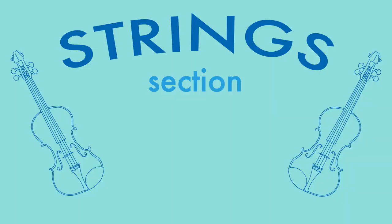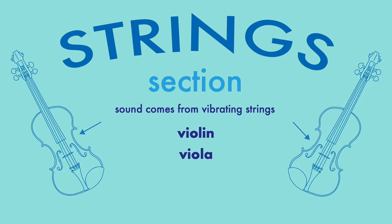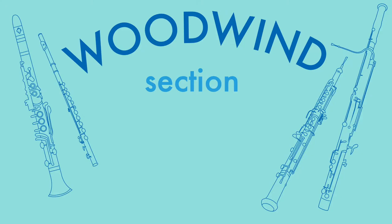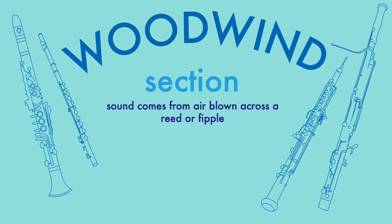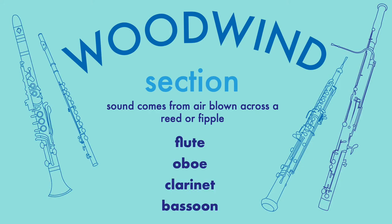The string section is made up of instruments that make their sound from vibrating strings, and these include instruments like the violin, the viola, the cello, and the double bass. Then the woodwind section is made up of instruments that generate their sound from air blown across a reed or fipple. A fipple is that little hole in a flute that you blow across, and these include instruments like a flute, an oboe, a clarinet, and a bassoon.